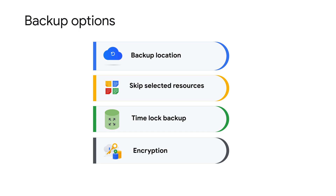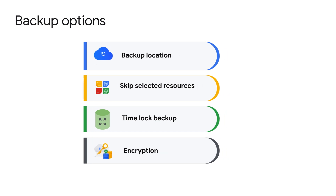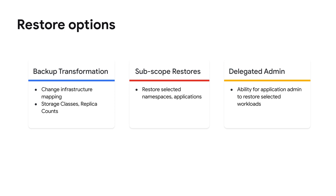Backup options allow you to select preferred backup destinations or select and skip certain resources. You can configure backup to exclude secrets so the data is not visible via the persistent disk control plane. By enabling time-lock backups, you can disable manual or automated deletion of backups to protect from malicious attacks. All data is encrypted by default, with the option of using customer-managed encryption keys (CMEK). The restore options let you restore a cluster into a new cluster or region, with flexibility to parameterize restore options to different storage classes. The sub-scope feature lets you restore a specific namespace or application if it's accidentally deleted or an upgrade fails. Cluster admins can also delegate access to app admins for ad hoc backups before critical application upgrades.